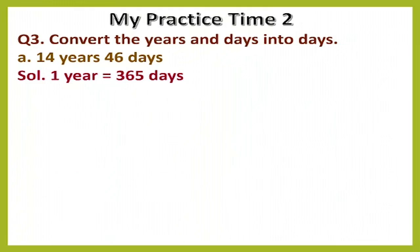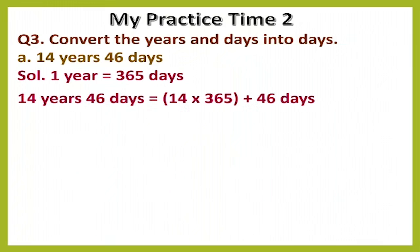As we all know, one year is equal to 365 days. Here we are having 14 years, so we have to multiply 14 by 365, and then we will add the 46 days to whatever we get after multiplying. Now let's see how to multiply 14 by 365.